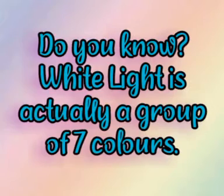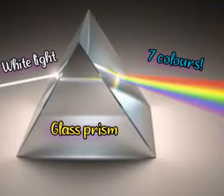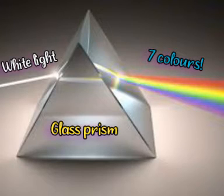Do you know, white light is actually a group of seven colors. You can also see it in a color prism — when the white light passes through a color prism, it gets split into seven different colors.